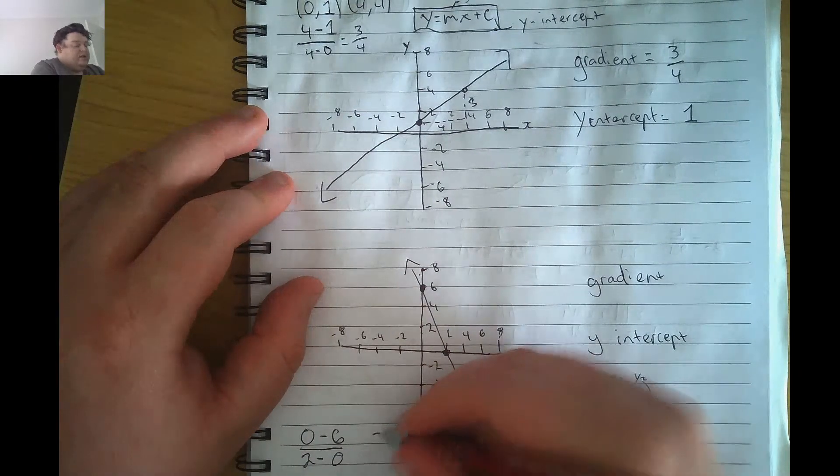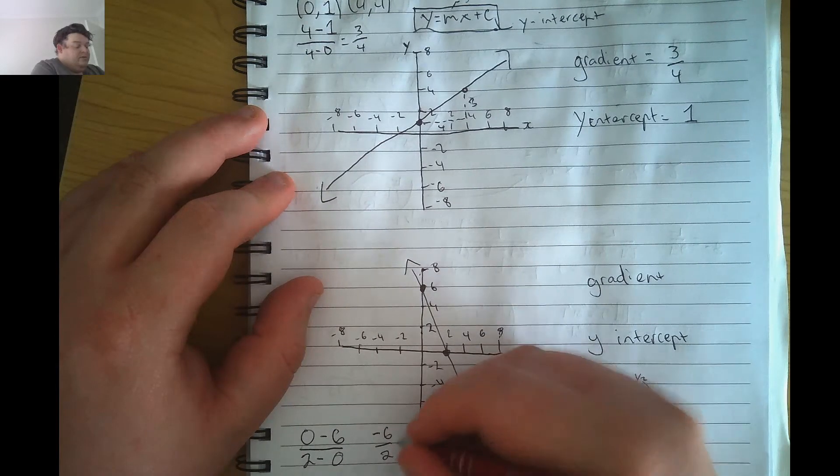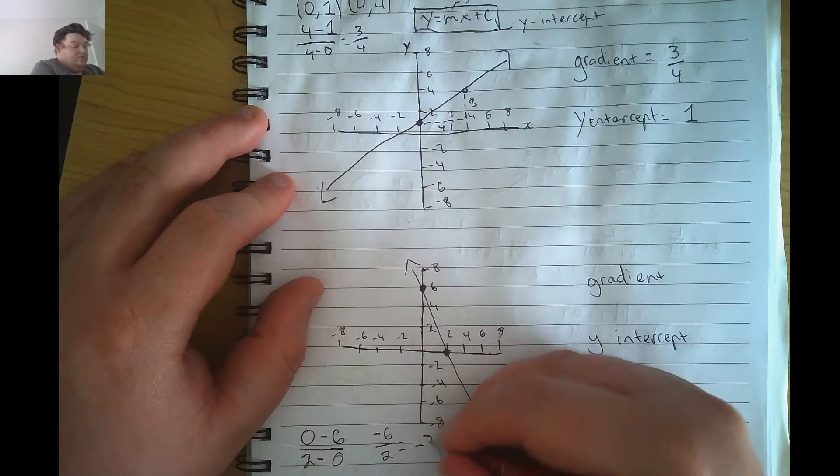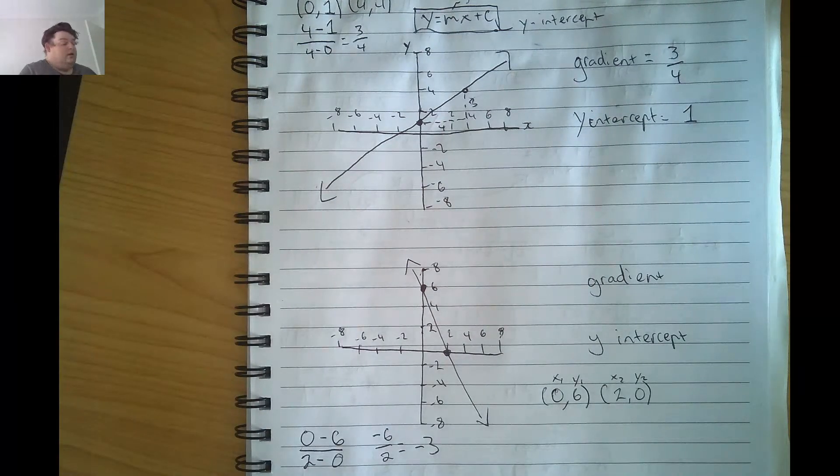0 minus 6 is negative 6. 2 minus 0 is 2, which means that my gradient is negative 3.